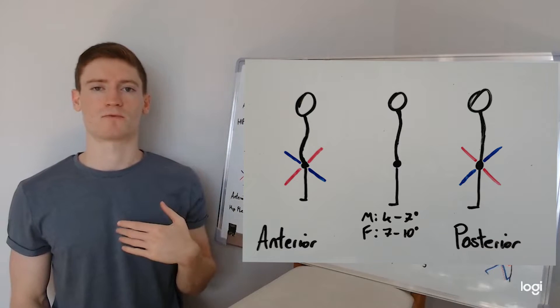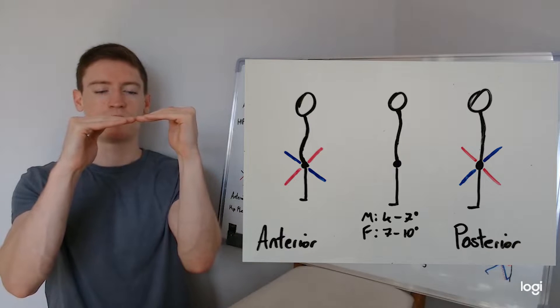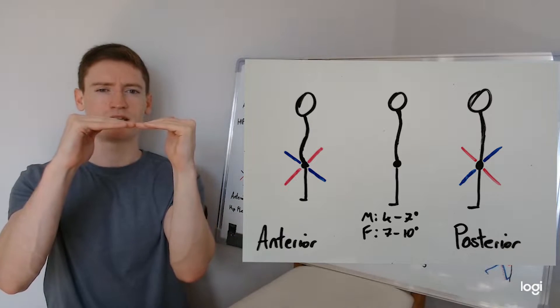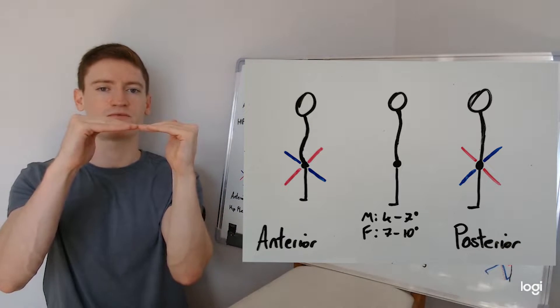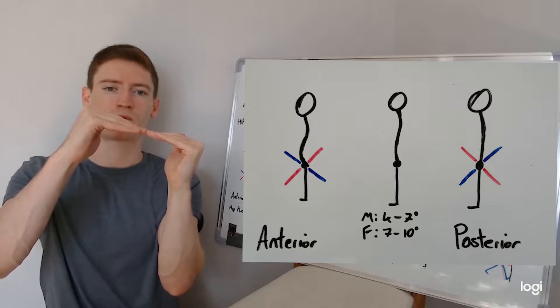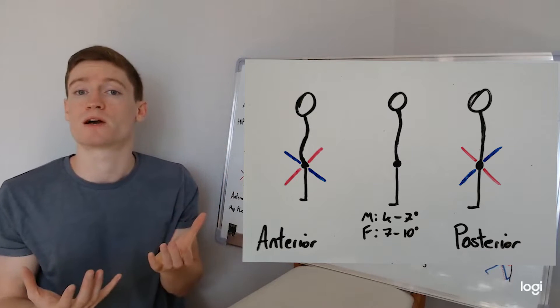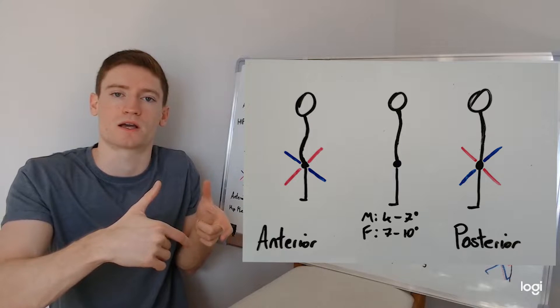So jumping back to that diagram from before, if you've got the front of the hips here and the back of the hips here, we should have an ever so slight tilt, four to seven degrees for males, seven to ten for females. If it's more of a tilt than that, we're into what we call an anterior pelvic tilt, a forward tilt. If you imagine a bucket of water, it would be pouring water out the front of the bucket.